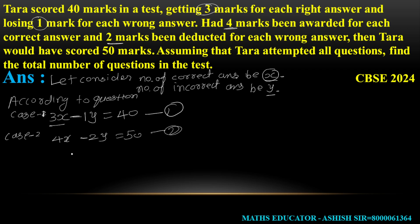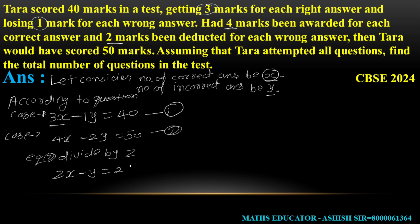Equation 2 को 2 से Divide कर दो। तो 4X ÷ 2 = 2X, minus 2Y ÷ 2 = minus Y, is equal to 50 ÷ 2 = 25। यह Equation No. 3 बन गया: 2X - Y = 25।